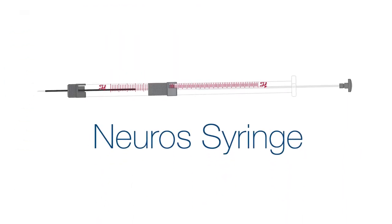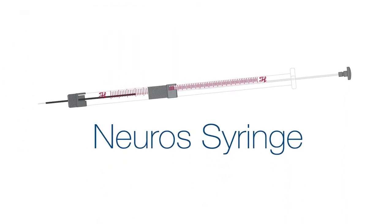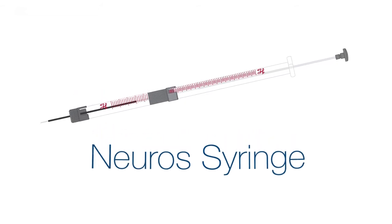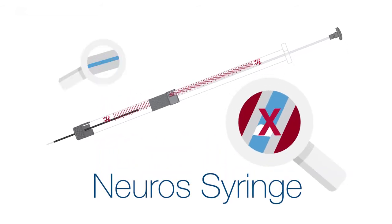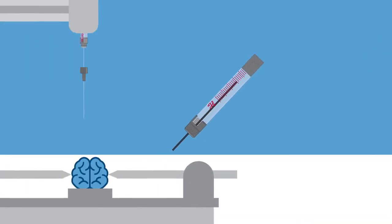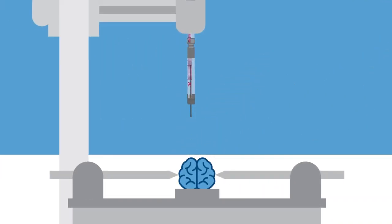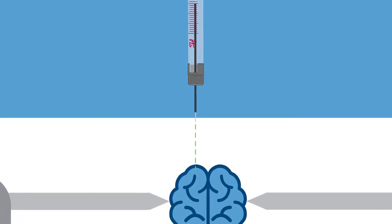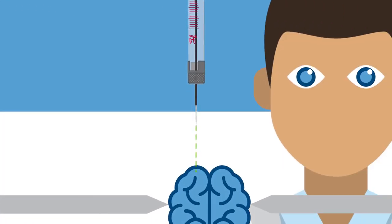The Neuros line of syringes overcomes these traditional shortcomings of the 7000 series, while also eliminating the risks of air gaps and flexible tubing. Neuros syringes have an innovative adapter that holds the 32 gauge needle straight relative to the syringe barrel.